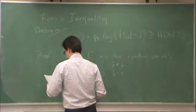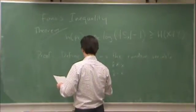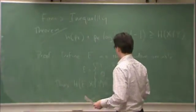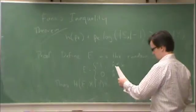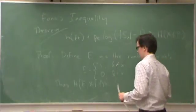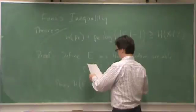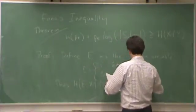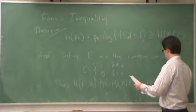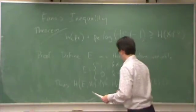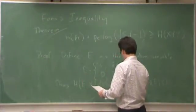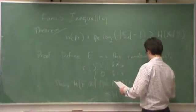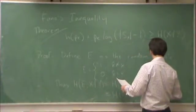Thus, the joint entropy of e and x given y is equal to, we can write this two ways according to the chain rule of entropy. This is equal to h of x given e and y, plus h of e given y.